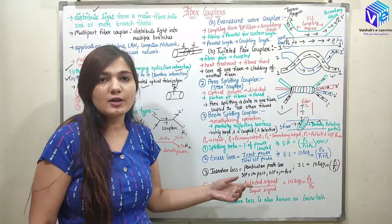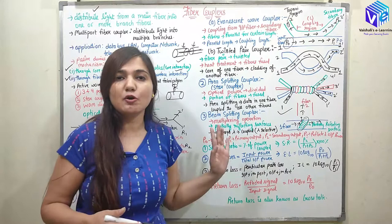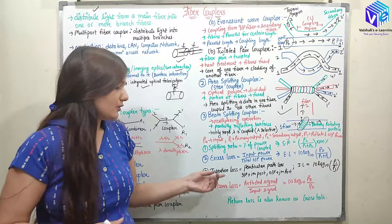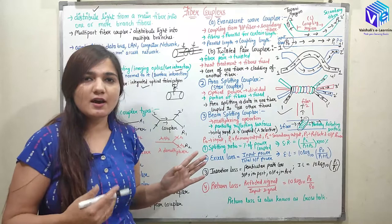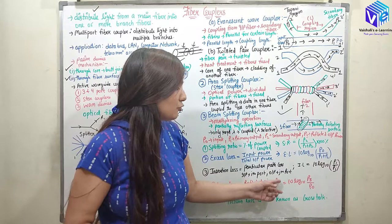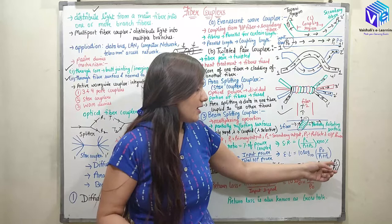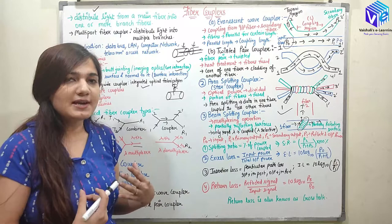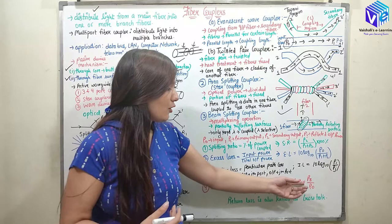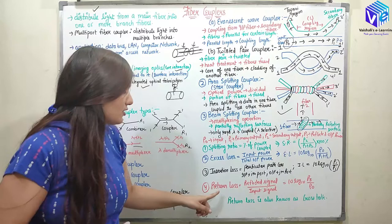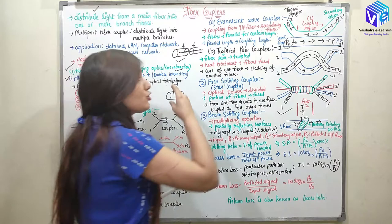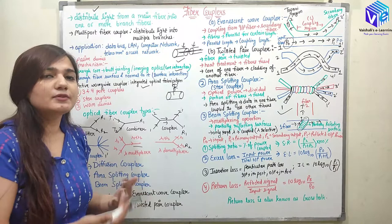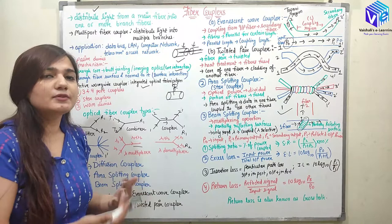Insertion loss is the path loss for a particular path — for the ith input port and jth output port, insertion loss = 10 log₁₀(Pi / Pj). This can be calculated easily for star couplers. Return loss is the reflected signal relative to the input signal: return loss = 10 log₁₀(P3 / P0), indicating how much of the input signal is reflecting back. Return loss is also known as crosstalk.